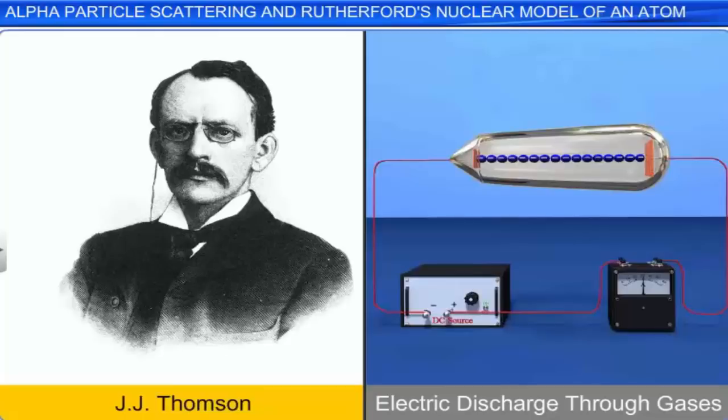J.J. Thomson's experiments with the discharge tube, with different gases filled in it one at a time, led to the conclusion that all the elements contain negatively charged particles, which were later called electrons.